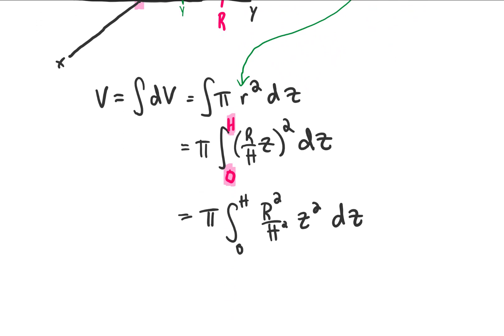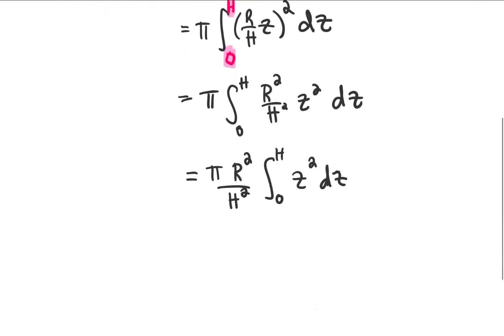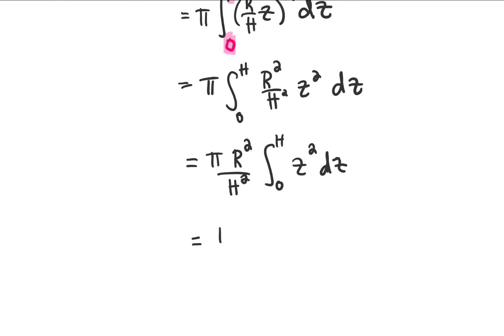The first thing I would probably do is square everything that's in the parentheses here. Keep in mind that capital R squared and H squared are both constants, so they can be taken out of the integral. Now we can integrate z squared with respect to z, which should be pretty easy. It's just one third z cubed evaluated from 0 to H.